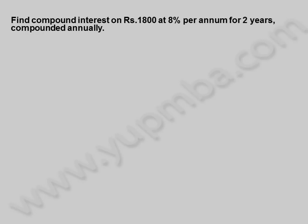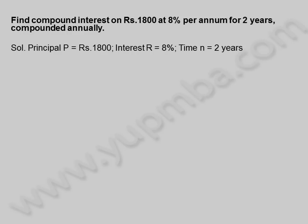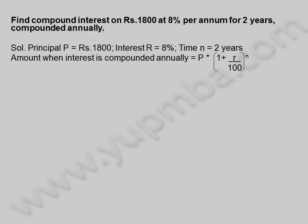Find compound interest on 1,800 rupees at 8 percentage per annum for 2 years, compounded annually. Principal P is equal to 1,800 rupees. Interest R is equal to 8 percentage. Time N is equal to 2 years. Amount when interest is compounded annually is equal to principal into 1 plus R by 100, whole power N.